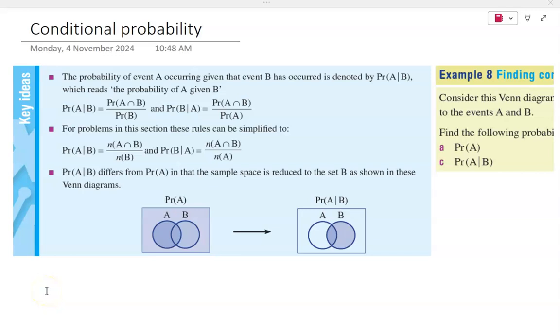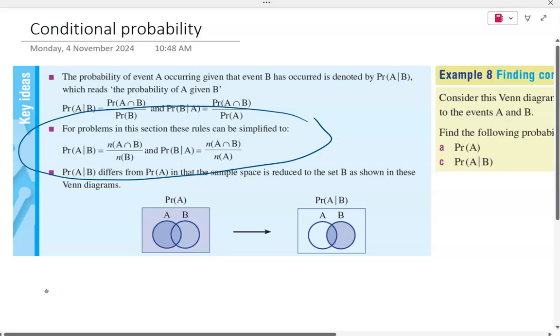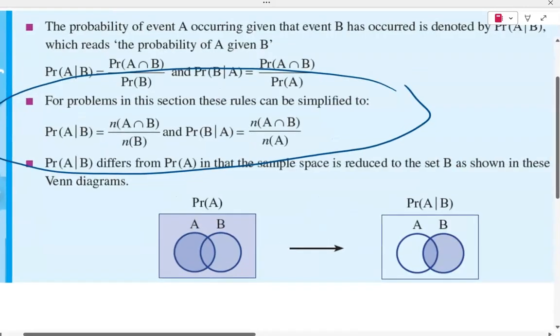Okay, with conditional probability, we're looking at the probability of an event happening given another event has already occurred. We're going to look at the notation for conditional probability. This notation is read as the probability of A given B. It means what's the probability of event A occurring given that event B has already occurred. And likewise, this is the probability of B given A.